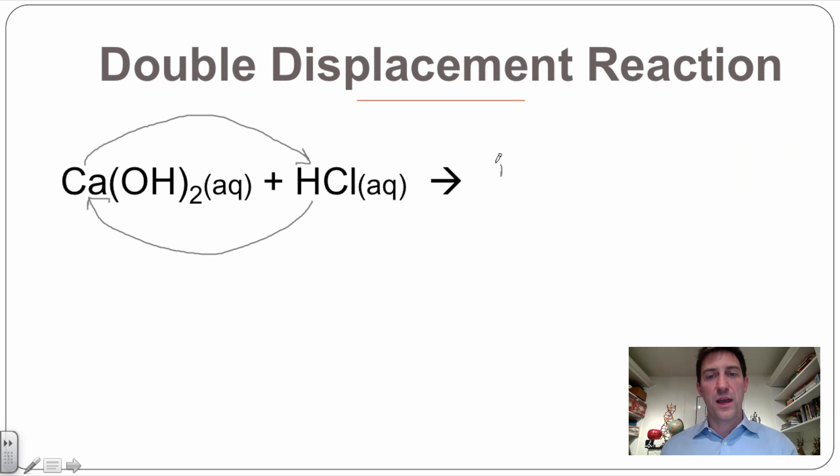So if it does that, let's write this out. We're going to have Ca plus the Cl plus this hydrogen is going to go over here and we're going to have HOH. HOH is two H's and an O, which is water.